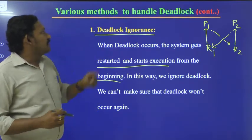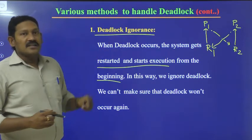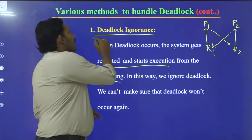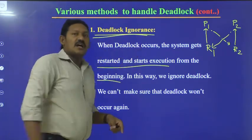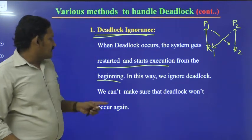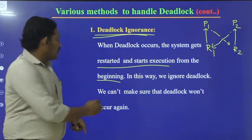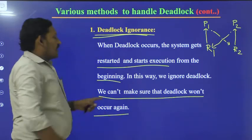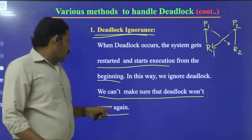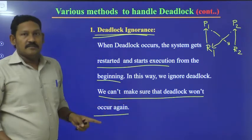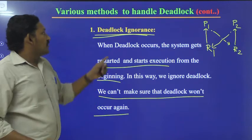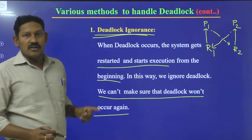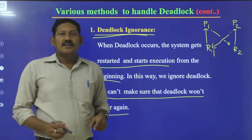So this is the simple method of handling the deadlock. Simply we can ignore the deadlock — that is what the author says. At the same time, the author is saying we can't make sure the deadlock won't occur again if we ignore it. With this we will wind up deadlock ignorance. Thank you.